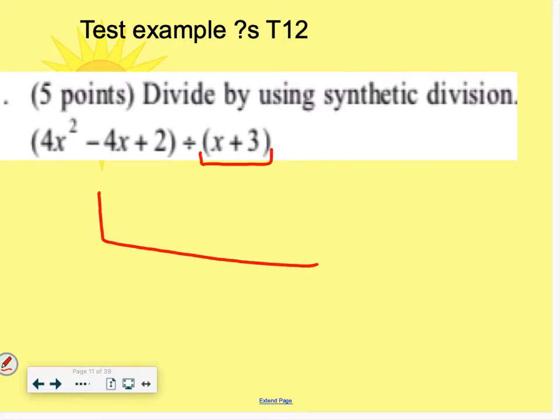And when you're using synthetic division, you're going to put the value that would make this divisor equal to 0. So if you solve that for x, you subtract 3 from both sides.